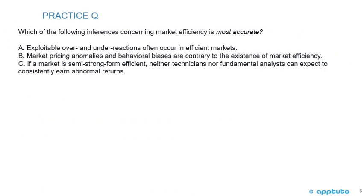We'll finish this LOS with one last practice question. Which of the following inferences concerning market efficiency is most accurate? A: Exploitable over- and under-reactions often occur in efficient markets. B: Market pricing anomalies and behavioral biases are contrary to the existence of market efficiency. Or C: If a market is semi-strong form efficient, neither technicians nor fundamental analysts can expect to consistently earn abnormal returns.